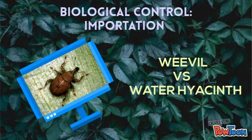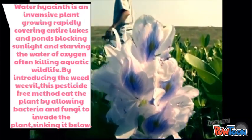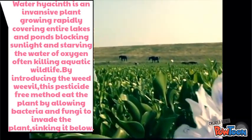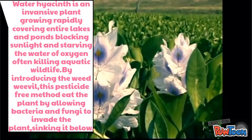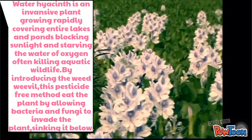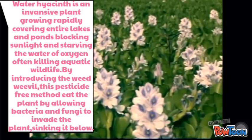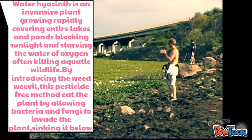Importation involves the introduction of a pest's natural enemies to a locale where they don't occur naturally. Water hyacinth is an invasive plant growing rapidly, covering entire lakes and ponds, blocking sunlight and starving the water of oxygen, often killing aquatic wildlife. By introducing the wheat weevil, this pesticide-free method eats the plant by allowing bacteria and fungi to invade the plant, sinking it below.